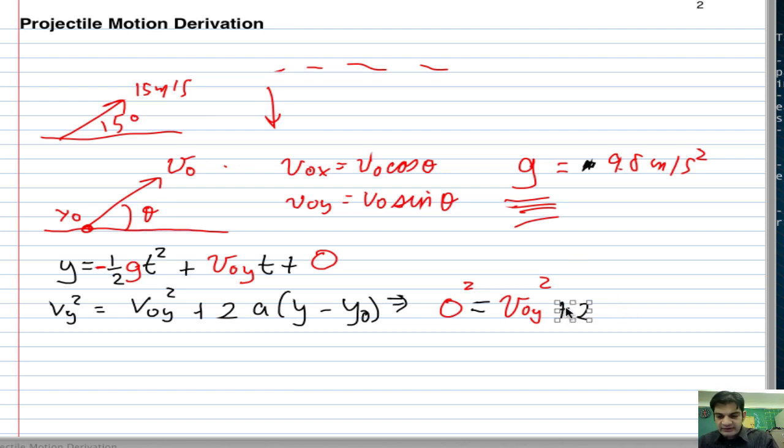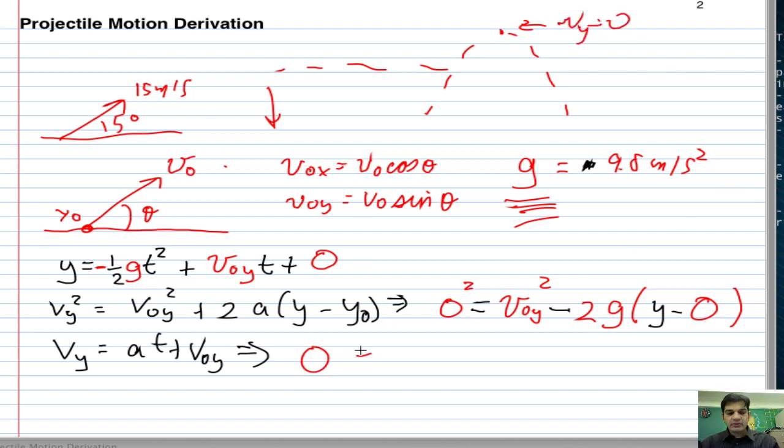So instead of adding this to get the g in there, what I'm going to do is I'm going to put minus 2 times g times my unknown y minus my initial position of 0. And then finally my third formula is vy equals at plus v0y, and actually what this translates to is I have 0 because my speed, remember when I throw something in the air and this vy at the top is 0 equals negative g times my unknown time plus v0y.